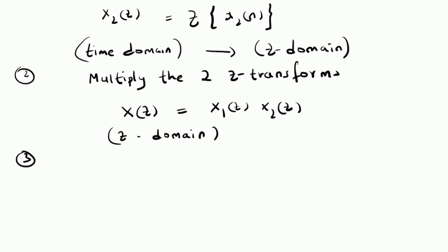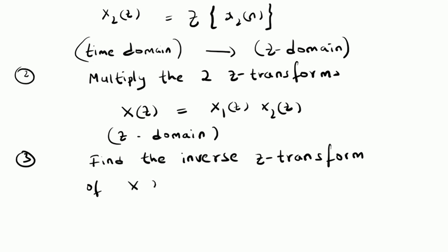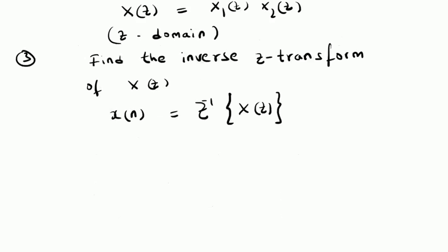In step three, we have to find the inverse Z-transform of X(z). That is, x[n] is the inverse Z-transform of X(z). This step is about converting the information in the Z-domain back to the time domain, so we get the time domain sequence back.